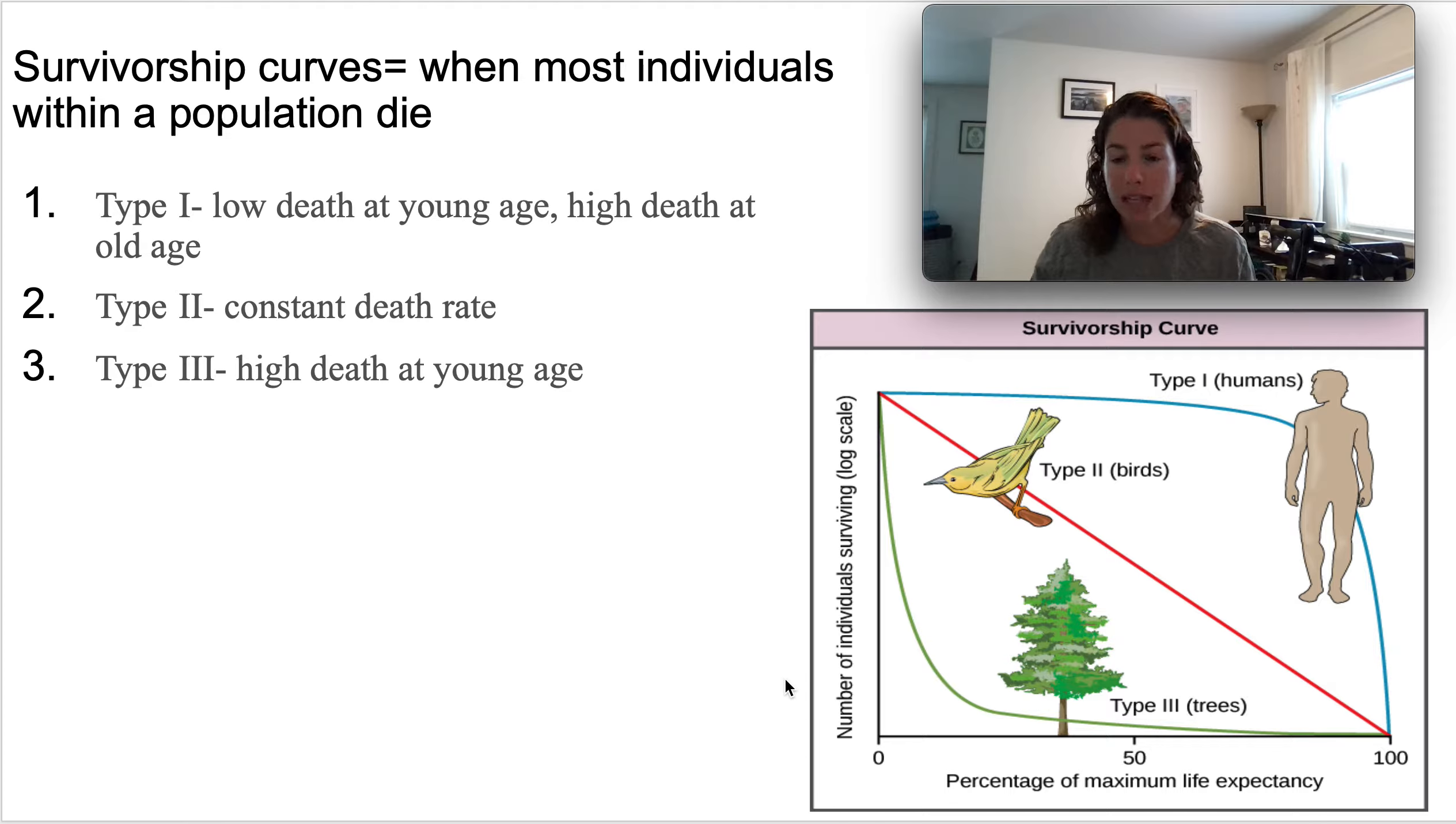So you have a lot dying at the very beginning. Type I, few deaths at the beginning, most likely you're going to live to your 100% life expectancy. Type III is the opposite—you have a lot, most likely you're not going to survive. There's a high chance that you will die at a very young age. And then a constant death rate, which is that your chances of you dying are equal across your whole life.